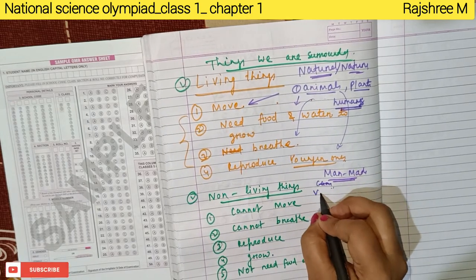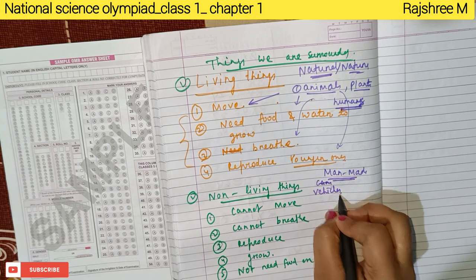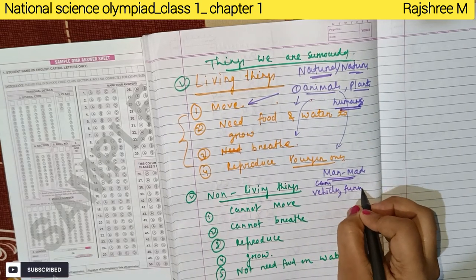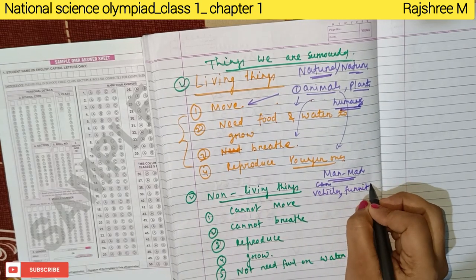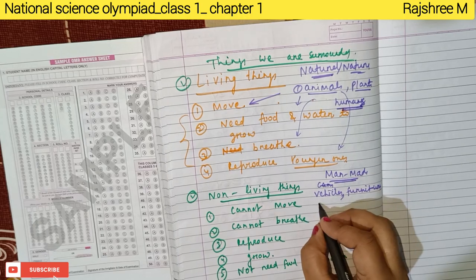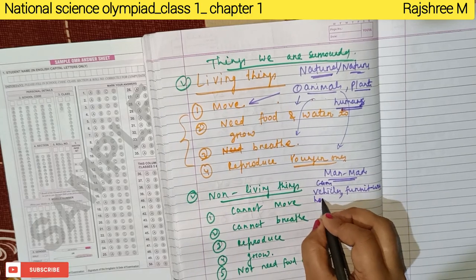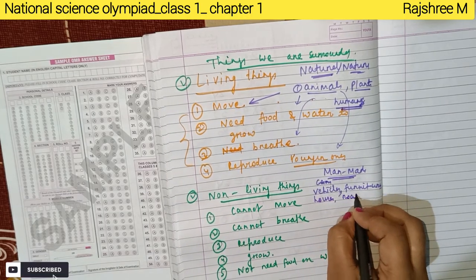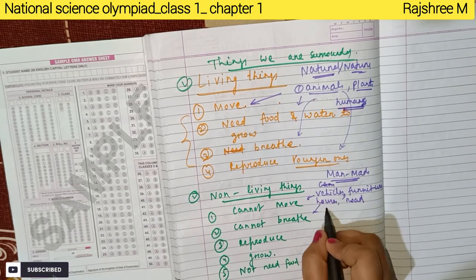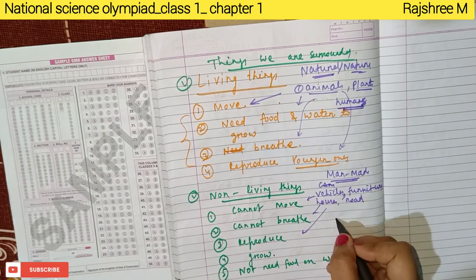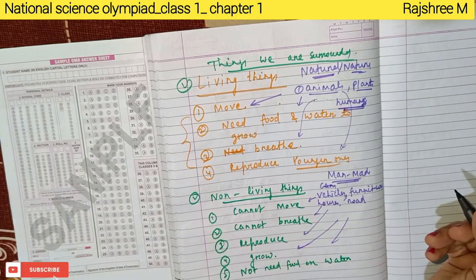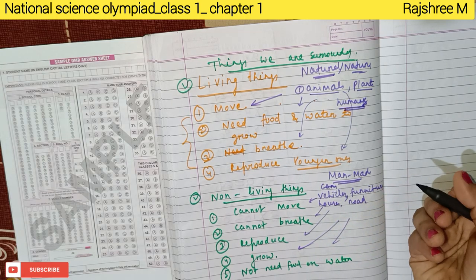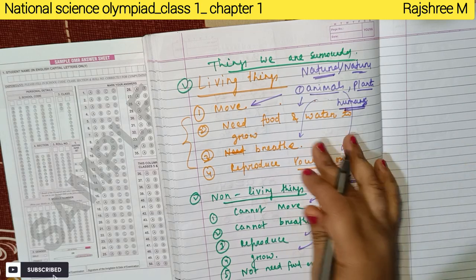Non-living things are man-made — like vehicles, furniture, houses, and roads. These things cannot breathe, cannot reproduce, cannot grow, and they don't need food or water to grow.